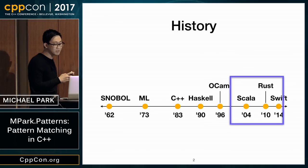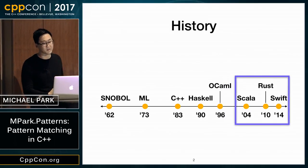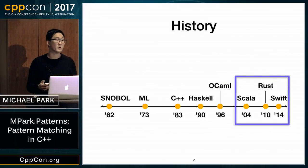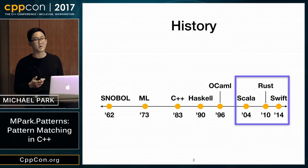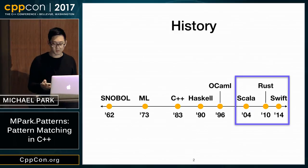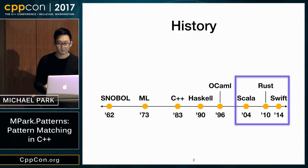More recently, many mainstream languages have also adopted the feature. The most popular ones from my perspective are Scala, Rust, and Swift. But other languages like C# and Java have also picked up pattern matching as well.